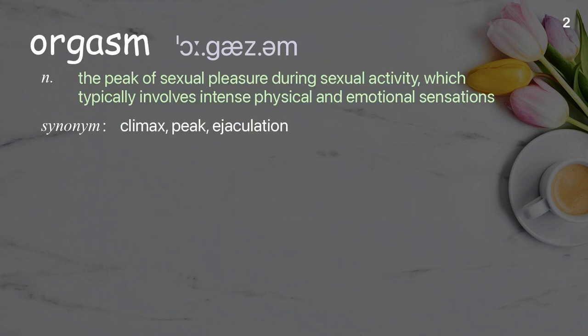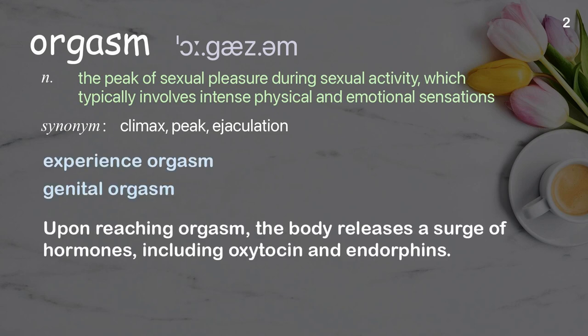Orgasm: the peak of sexual pleasure during sexual activity, which typically involves intense physical and emotional sensations. Examples: experience orgasm, genital orgasm. Upon reaching orgasm, the body releases a surge of hormones including oxytocin and endorphins.